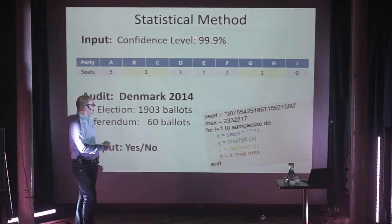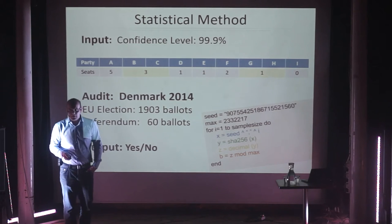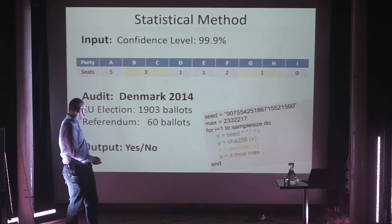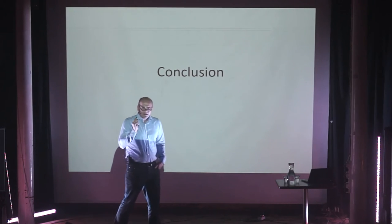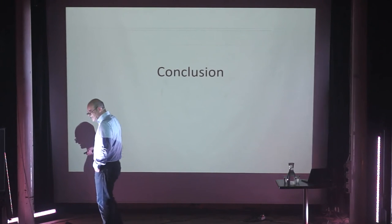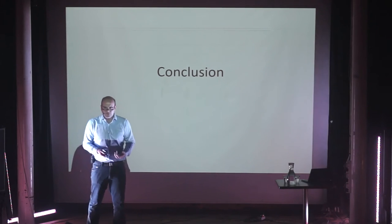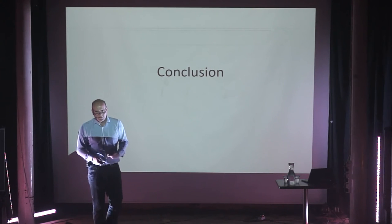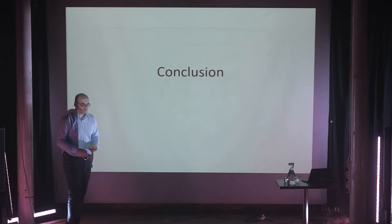So we did an experiment. Using Philip Stark's theory, we wanted to be 99.9% sure and computed that we needed to audit 1,903 ballots. So if you take 1,903 ballots, you can be sure the D'Hondt algorithm computed the right result with a 99.9% confidence interval. For the referendum last year there were only 60 ballots needed. This is an exciting area that brings together mathematics from social choice, computer security, cybersecurity, cryptography, programming languages, social science, political science, and statistics — all for what seems like a very simple problem that is extremely difficult to solve, and for which we don't have a good solution.